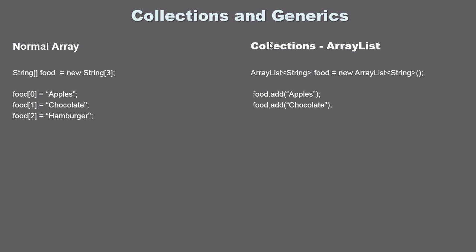So when should you use a normal array and when should you use a collection? Use a normal array if you already know the size — if you know you only need three elements and that will never change, use a normal array because it's more efficient. If you're not sure of the size initially, use a collection. That's the basic rule.